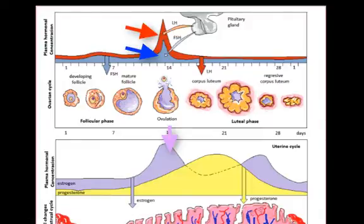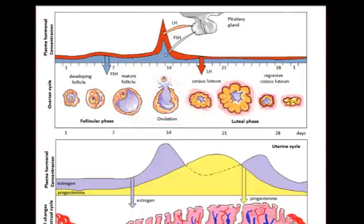Meanwhile, the oocyte has been developing, and this LH and FSH surge causes ovulation of the egg. Release of progesterone, estrogen, and inhibin from the corpus luteum then inhibits further release of FSH and LH from the anterior pituitary, so another egg will not start developing. The corpus luteum continues doing this for about seven or eight days after ovulation, at which point it starts to disintegrate.